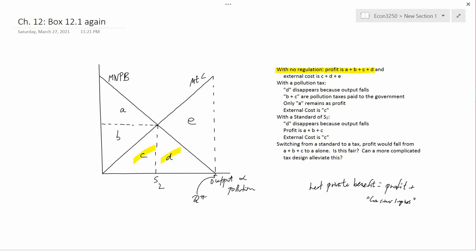How about with a pollution tax? With an optimal pollution tax, this is the optimal tax. You know that the level the firm chooses will go along its MNPB curve, so it's going to be s2.